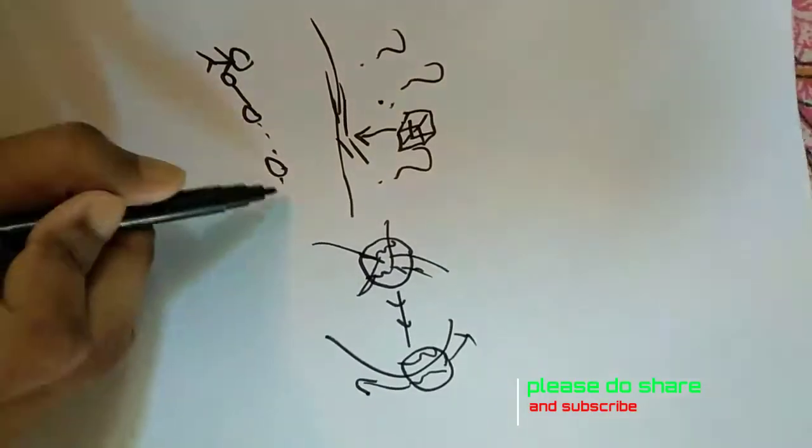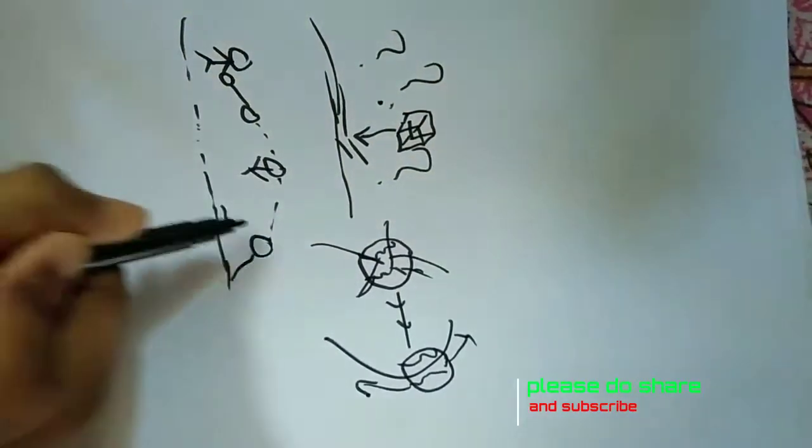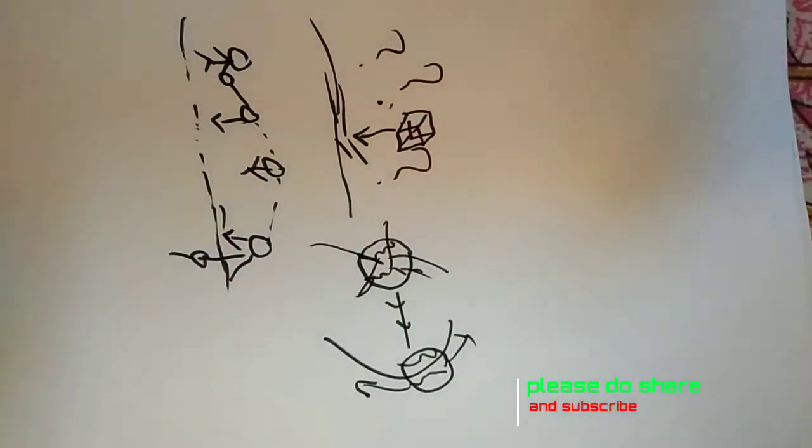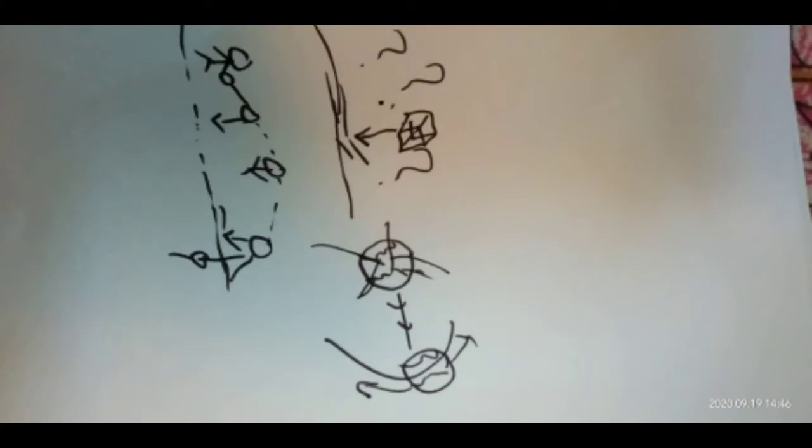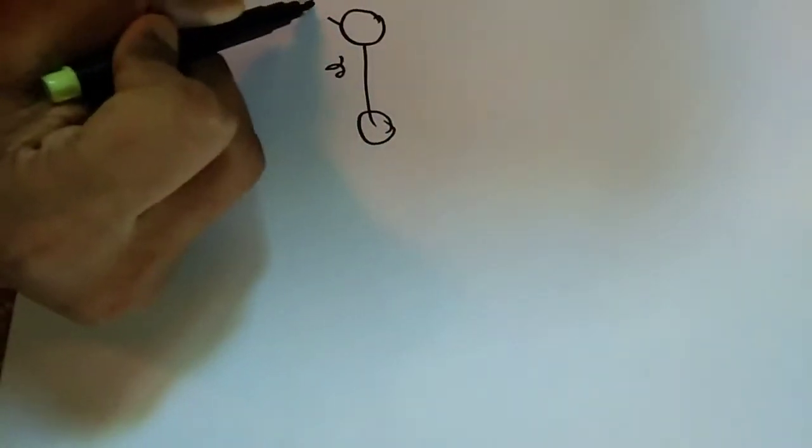Why do things fall down when you throw them or drop them? The answer is an invisible force that pulls objects towards each other. Gravity is what keeps you on the ground and what makes things fall. Anything that has mass also has gravity.